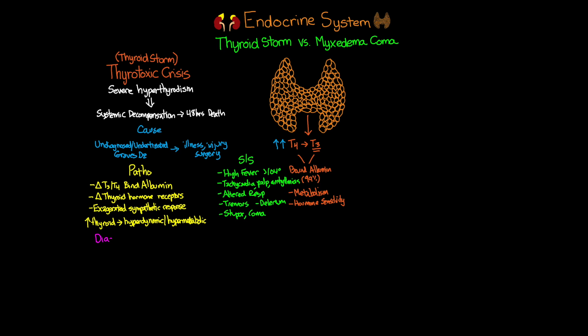When diagnosing thyroid storm, it's important to know there's no specific lab test that can distinguish this thyrotoxic crisis from generalized uncomplicated hyperthyroidism. We will check labs like TSH and free T3 and T4 levels, but beyond recognizing hyperthyroidism and seeing these signs and symptoms, that's largely what we'll use to make the diagnosis. Some studies show an undetectable TSH when patients are in crisis, but there are no true defining diagnostic tests.